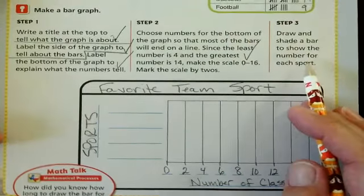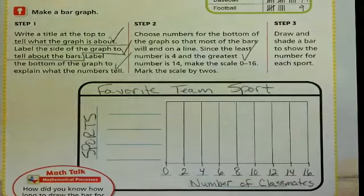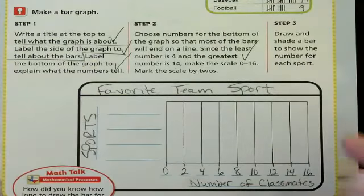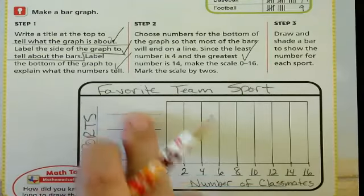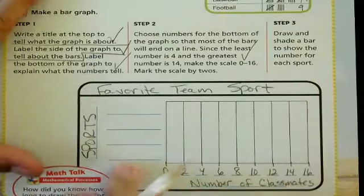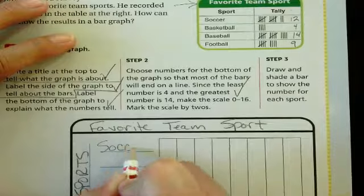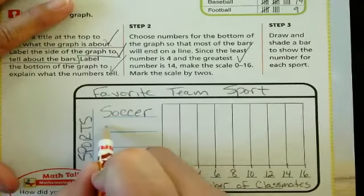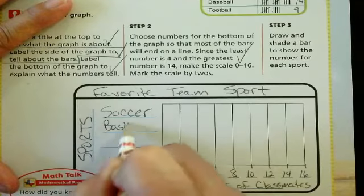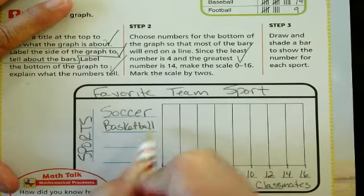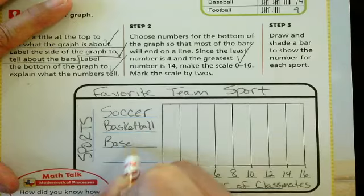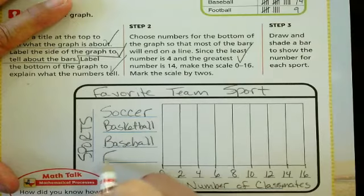Number three, draw and shade a bar to show the number for each sport. What did I forget to do? What did I forget to write on my graph? That's right. I forgot to list the types of sports. So let's go back and add those in. We have soccer. We have basketball. Baseball. And football.